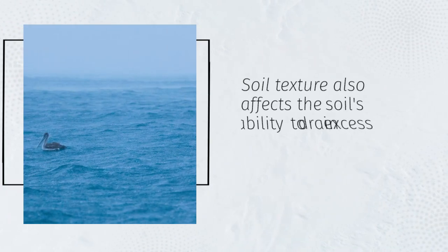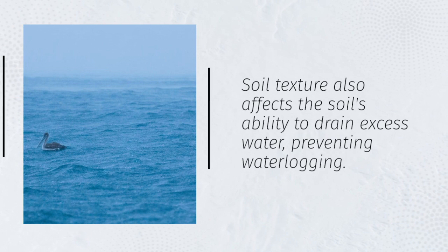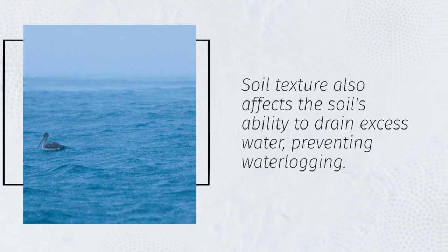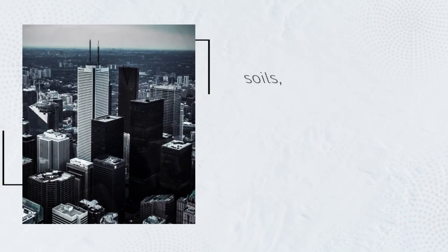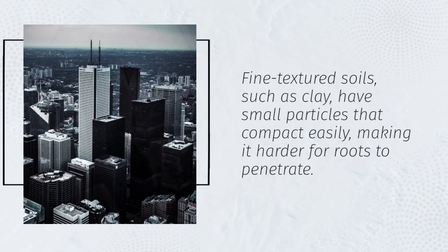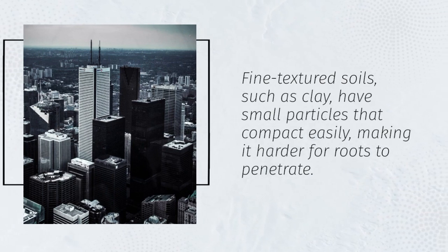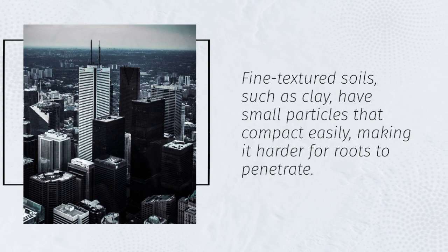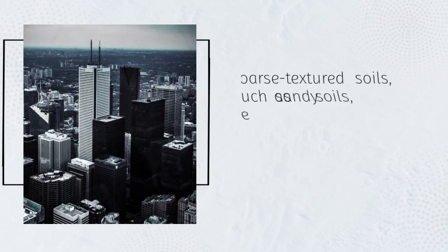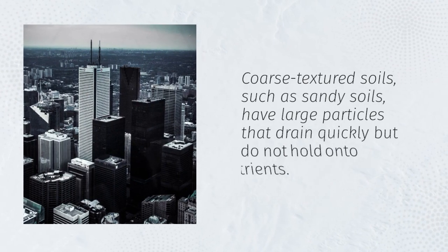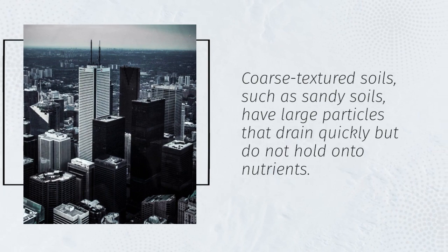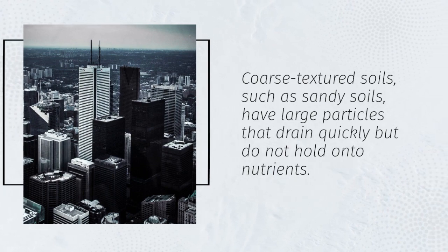Soil texture also affects the soil's ability to drain excess water, preventing waterlogging. Fine textured soils, such as clay, have small particles that compact easily, making it harder for roots to penetrate. Coarse textured soils, such as sandy soils, have large particles that drain quickly but do not hold onto nutrients.